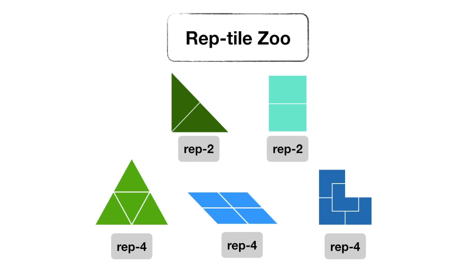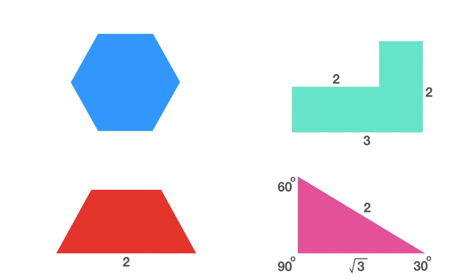I have some specimens for you to classify. Here are four polygons. A regular hexagon, a regular hexagon cut in half, a long L, and a 30-60-90 triangle. Unless otherwise marked, each edge is length 1.